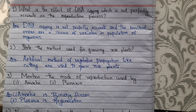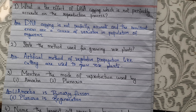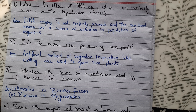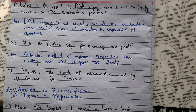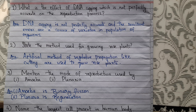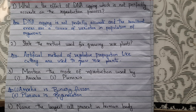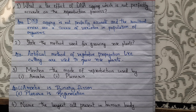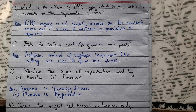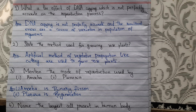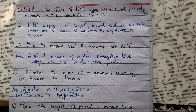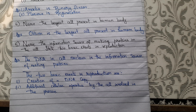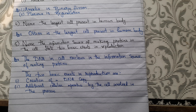The first question is: what is the effect of DNA copying, which is not perfectly accurate, on the reproduction process? The answer is that DNA copying is not perfectly accurate, and the resultant errors are a source of variation in the population of organisms. The second question is: state the method used for growing rose plants. Artificial methods of vegetative propagation, like cutting, are used to grow rose plants.